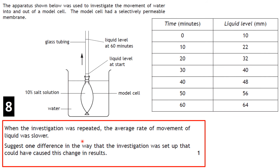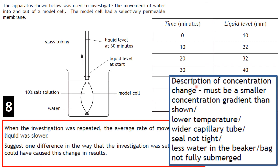When the investigation was repeated the liquid rose more slowly — suggest one difference in setup. Possible answers: smaller concentration gradient, lower temperature, wider capillary tube, seal not as tight, less water in the beaker, or not fully submerged. The key idea is any change that reduces the concentration gradient — for example, if the water inside the bag was a more similar concentration to the water outside.